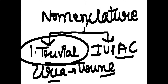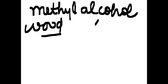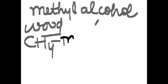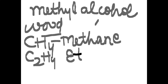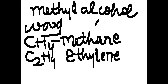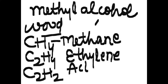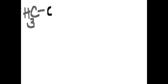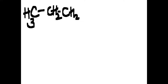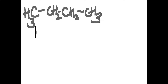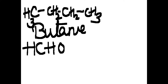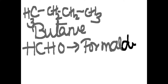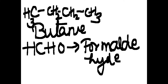I am going to discuss the common or trivial names of some organic compounds. For example, CH4 — the common name is methane. Similarly, C2H4 — the common name is ethylene. And C2H2 — this is acetylene. Same way, the compound with 4 carbon atoms — CH3CH2CH2CH3 — will be termed as butane. And HCHO is termed as formaldehyde.